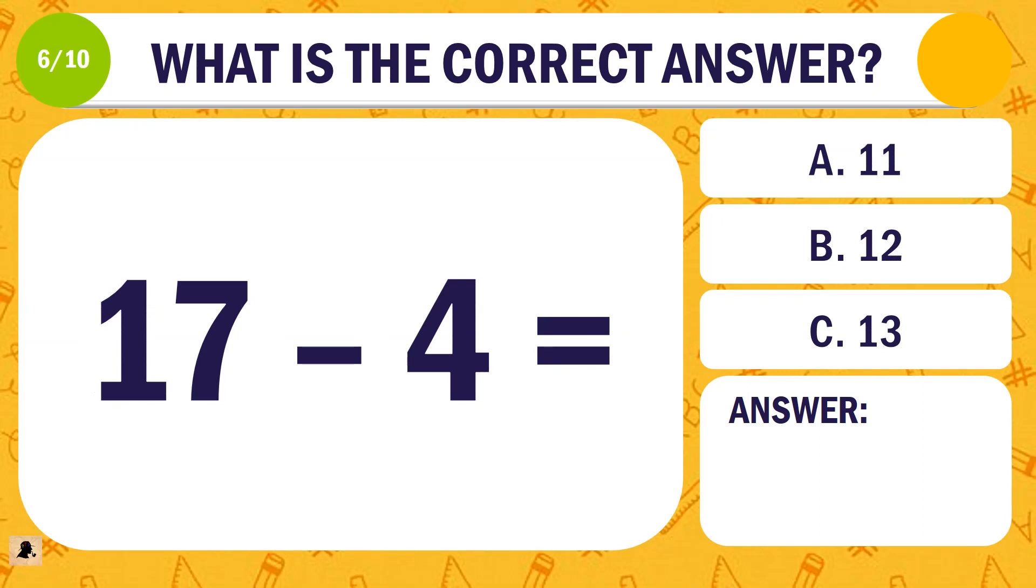Question 6. What is the correct answer for 17 minus 4? A. 11. B. 12. Or C. 13.